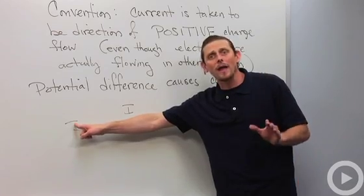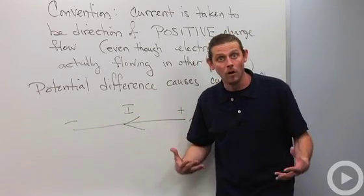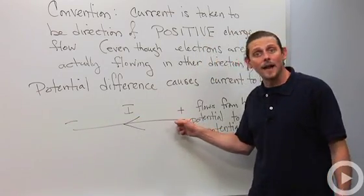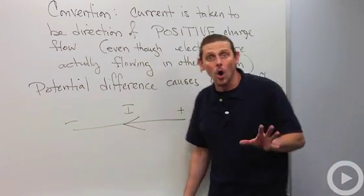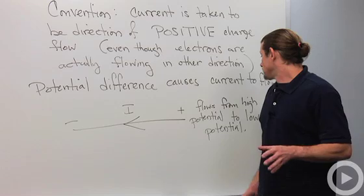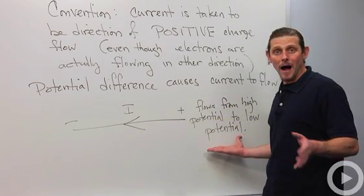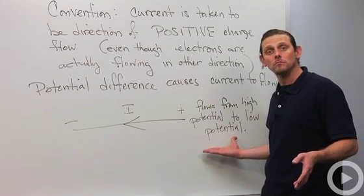So that's the way that we can make current flow is we can make one side of a conductor at a high potential and the other side at a low potential. So we always flow from high to low and that's current.